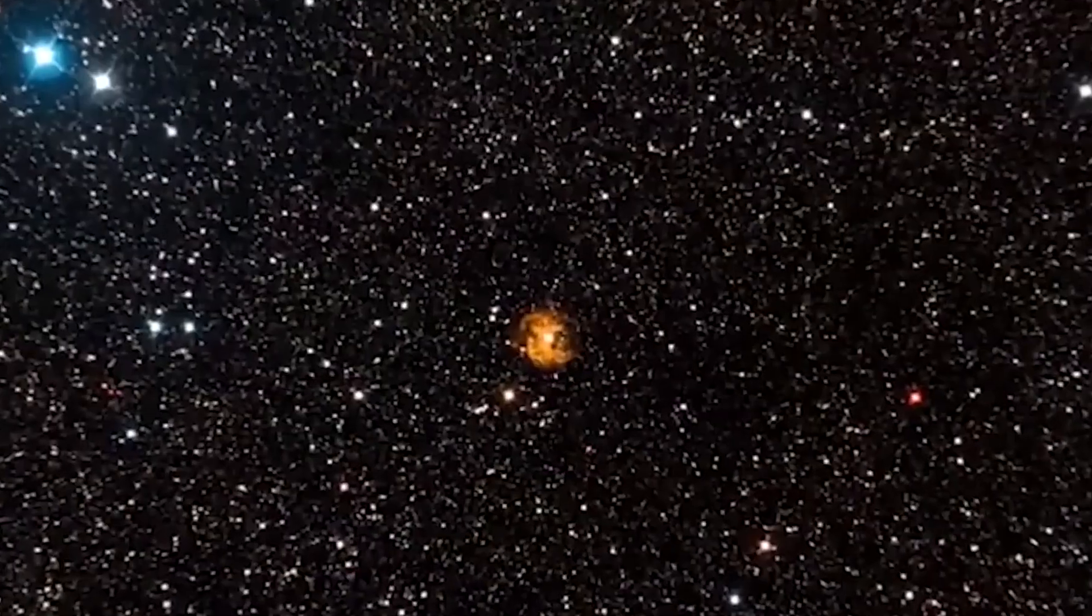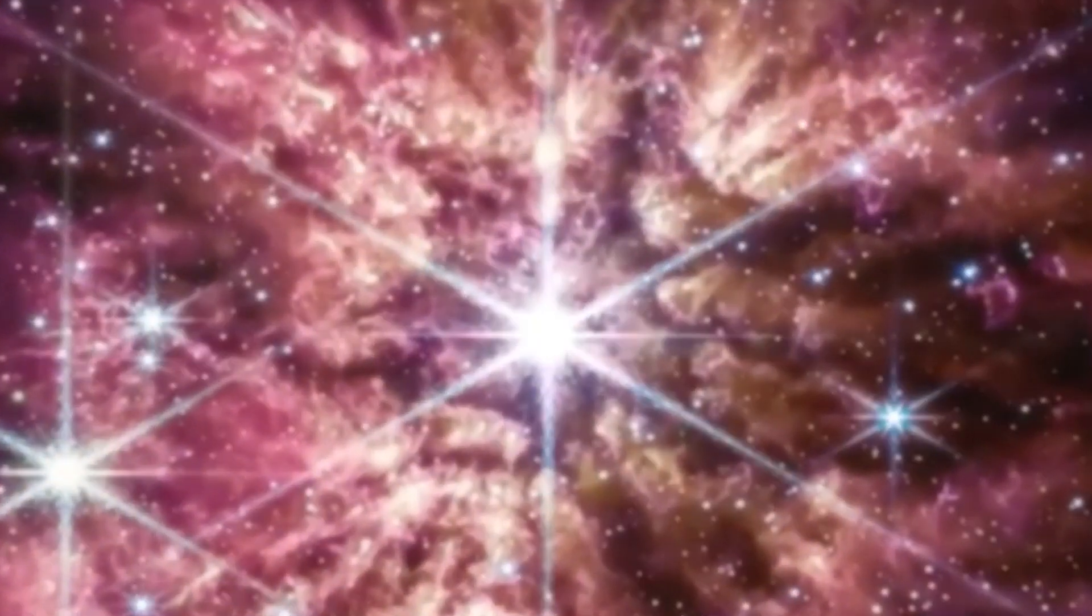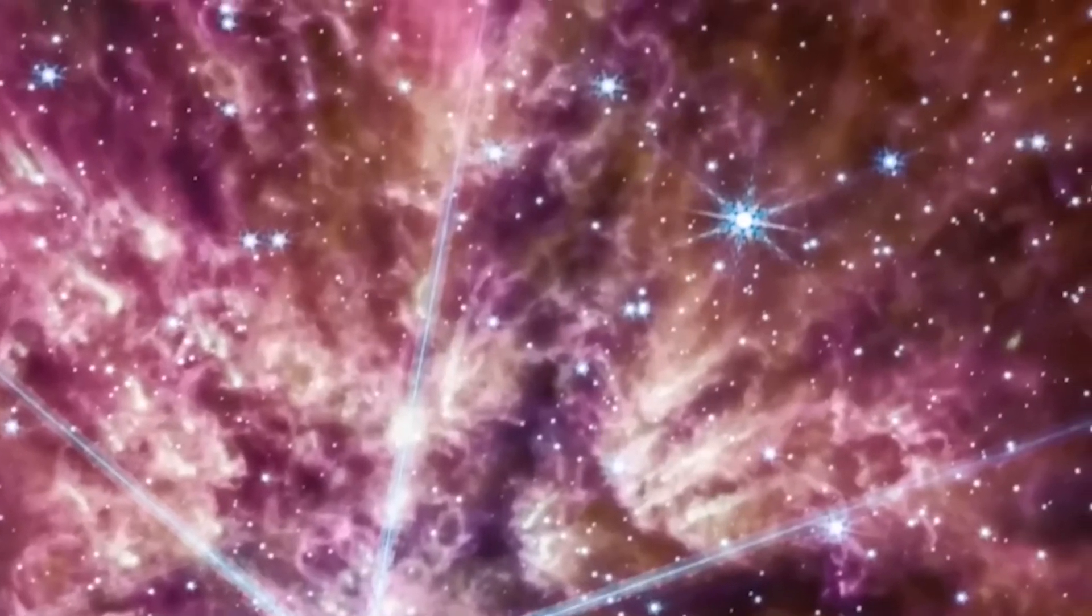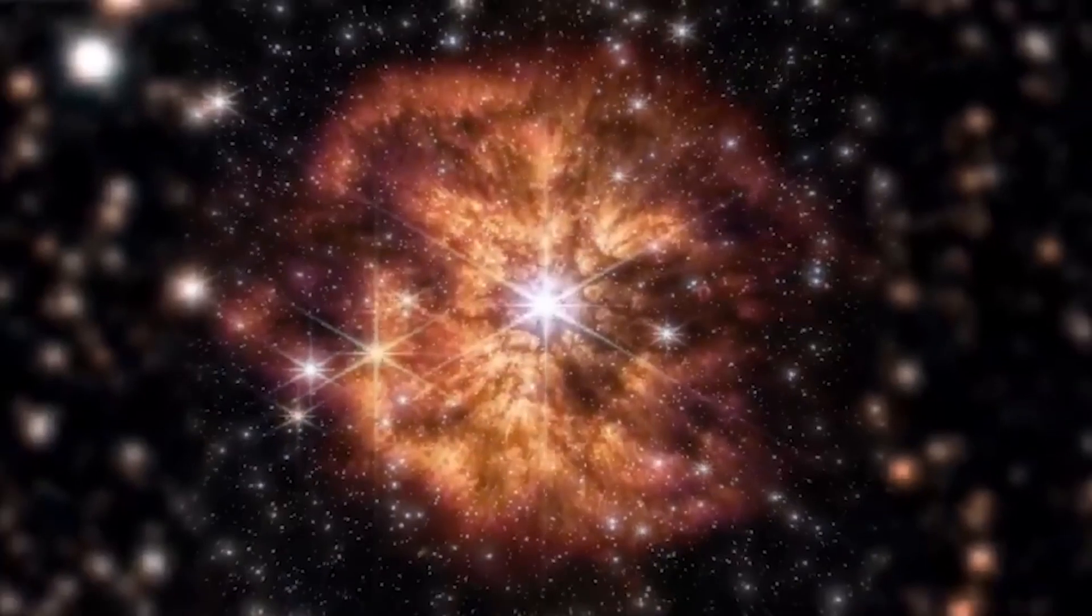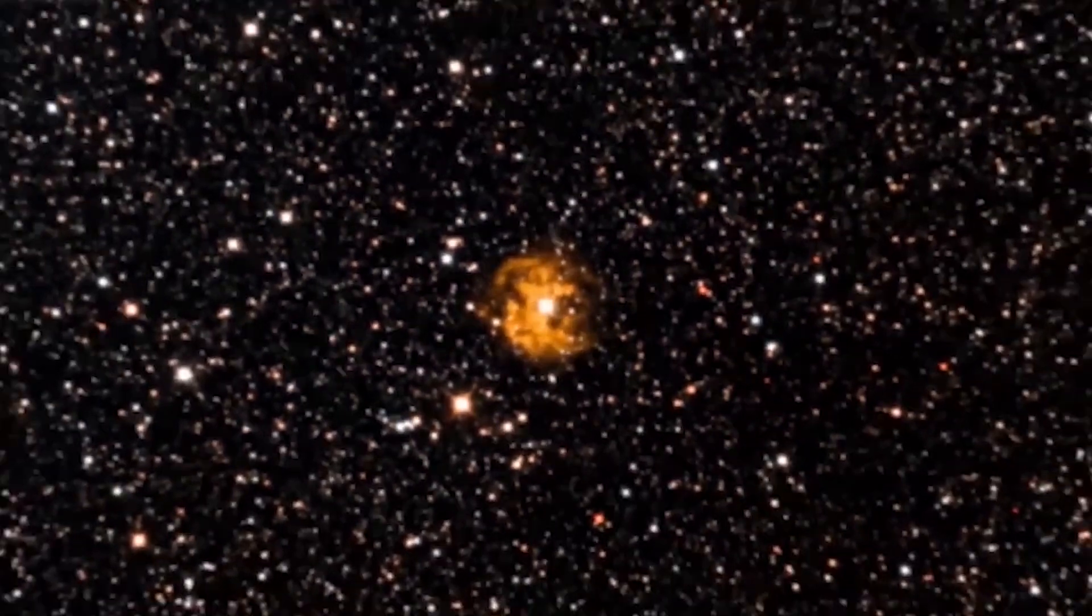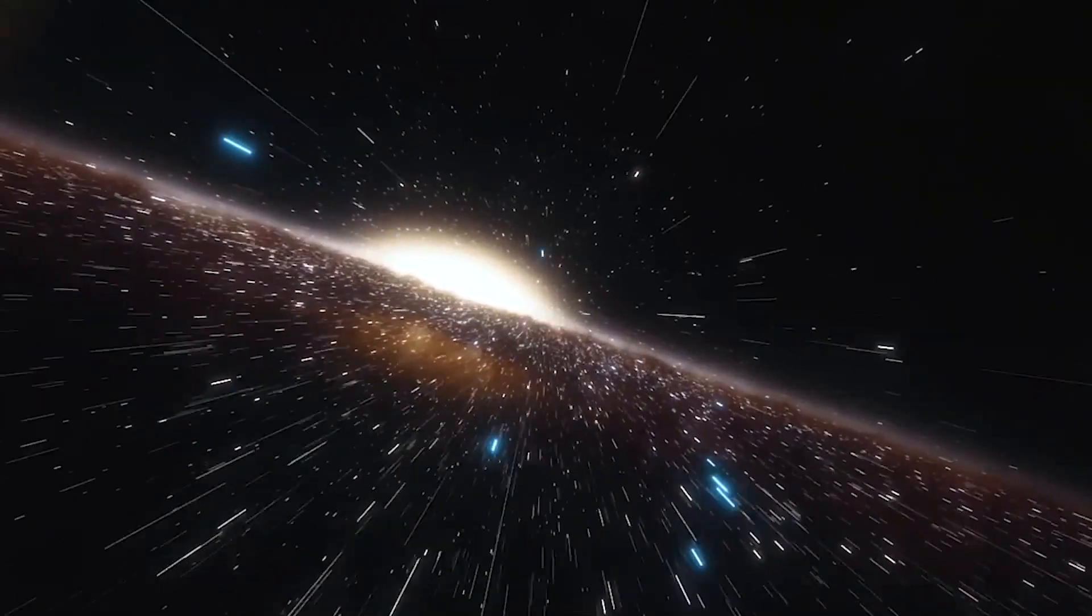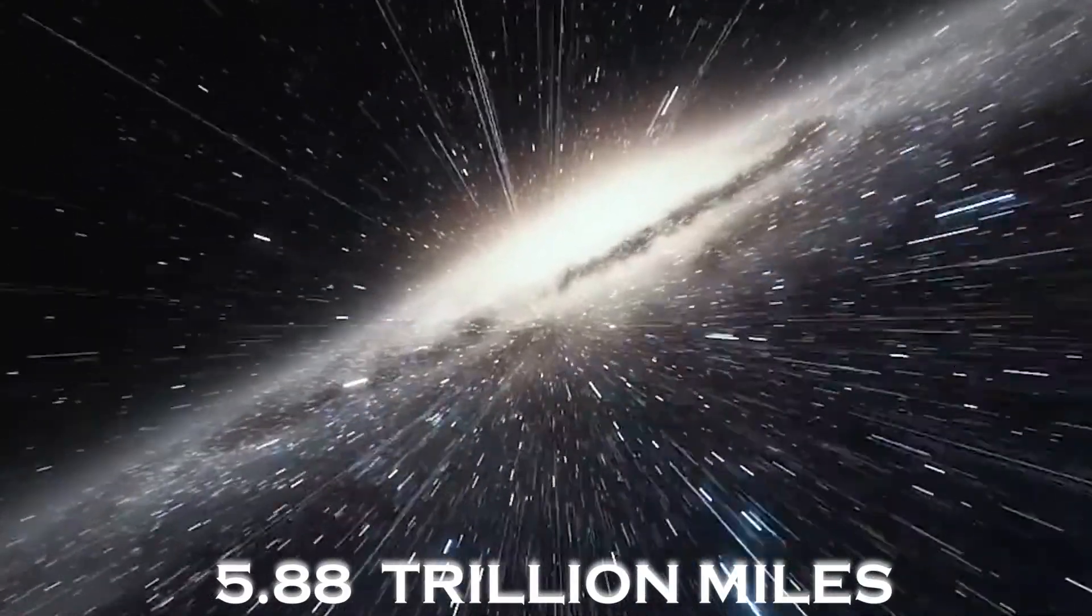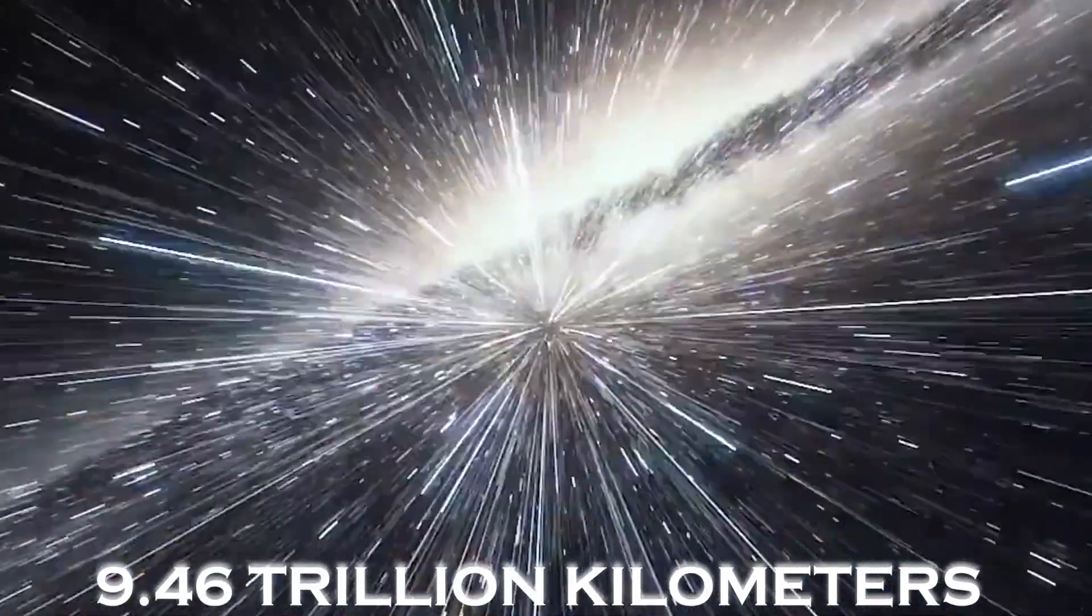But how does the observable universe differ from the universe as a whole? Simply put, the observable universe is only a small part of the entire universe, which we do not fully understand or know entirely. Although the size and shape of the entire universe remains a mystery, the diameter of the observable universe is estimated to be about 93 billion light years. To put this in perspective, a light year is the distance light travels in one year, which is roughly equivalent to 5.88 trillion miles or 9.46 trillion kilometers.